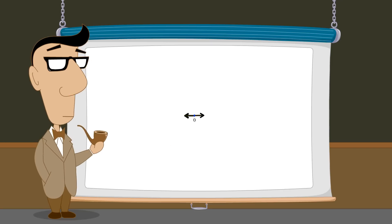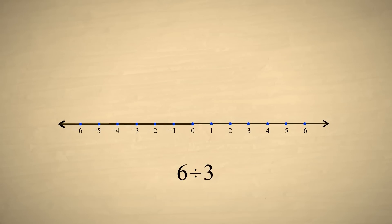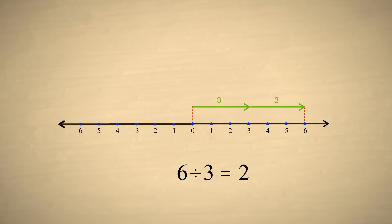There are two ways to interpret what the division operation represents. Take for example, six divided by three. One way to interpret this is that we are to divide six into three equal pieces — each piece will end up having a length of two. A second and equally legitimate way is that we are asking how many times three fits into six. The answer is two. No matter which interpretation we prefer, six divided by three is two.